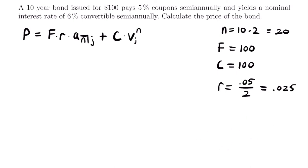The same applies to the yield rate. Even if the problem doesn't explicitly state it, assume the yield rate is a nominal interest rate convertible semi-annually. The bond yields 6% convertible semi-annually, so j equals 0.06 divided by 2, which equals 0.03. You need to divide your rates by 2 to get effective semi-annual rates for the price calculation — do not use the raw nominal values.